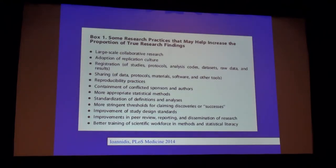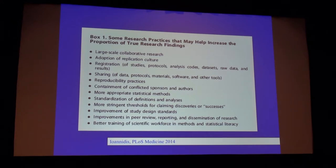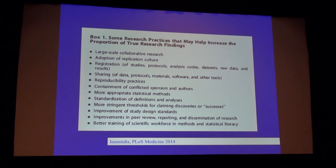The solutions can be grouped into 12 families: large-scale collaborative research; adoption of replication culture; registration of studies, protocols, analysis codes, data sets, raw data, and results; sharing of data, protocols, materials, software, and other tools; reproducibility checks and related practices; containment of conflicted sponsors and authors; more appropriate statistical methods; standardization of definitions and analysis; more stringent thresholds for claiming discoveries or successes; improvement of study design standards; improvements in peer review, reporting, and dissemination of research; and better training of the scientific workforce in methods and statistical literacy. For these solutions to work, we need to find ways to incentivize and reward people who adopt them.